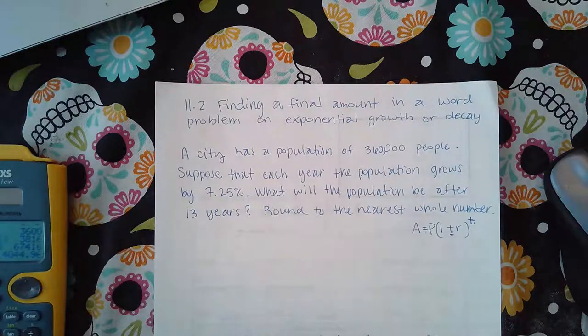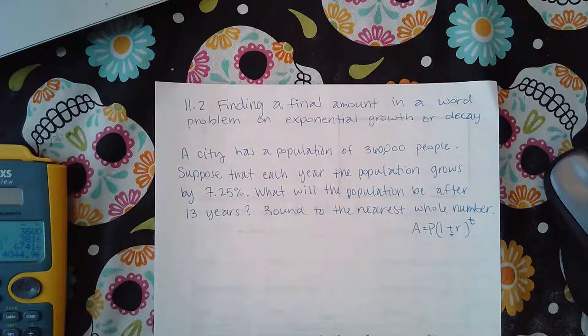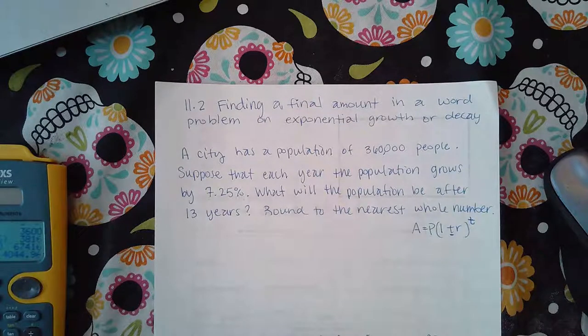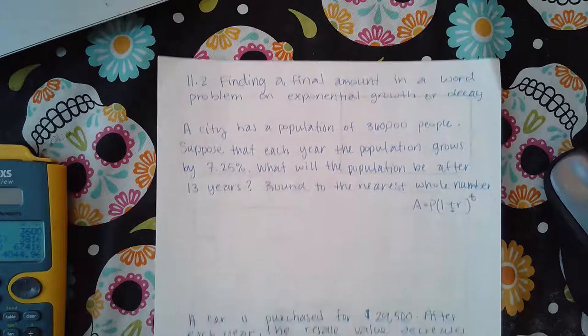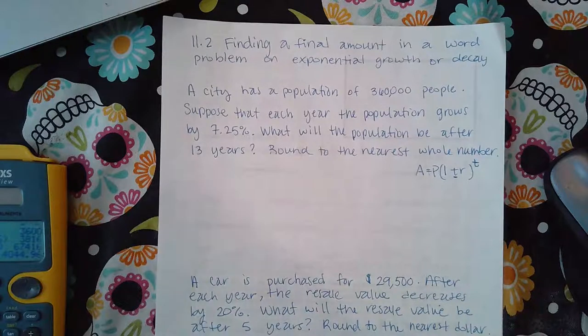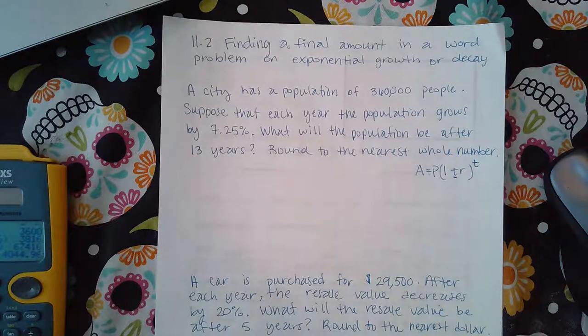So, here we're doing finding a final amount in a word problem on exponential growth or decay. It says a city has a population of 360,000 people.